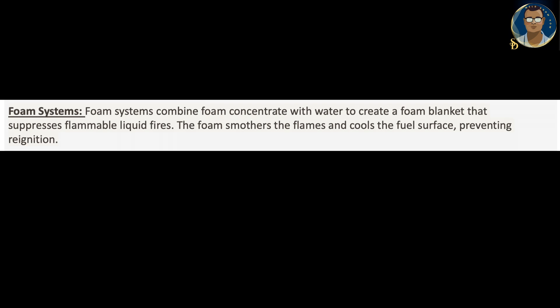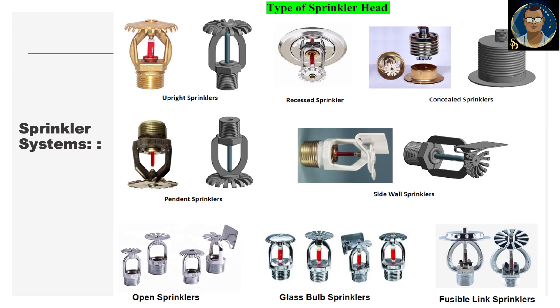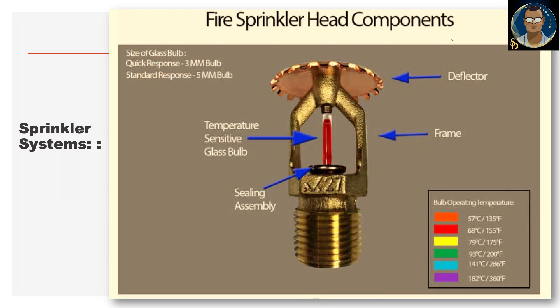Here are some sprinkler photos for your information and knowledge. Fire sprinkler heat components — a sprinkler basically has a temperature-sensitive glass bulb and a frame to hold everything, plus a deflector that deflects the water downwards when it sprinkles. Regarding glass bulb properties: quick response uses a 3 mm bulb and standard response uses a 5 mm bulb. The bulb operating temperature ranges from 57°C to 182°C, and the appropriate bulb should be selected based on the facility or building's safe temperature.